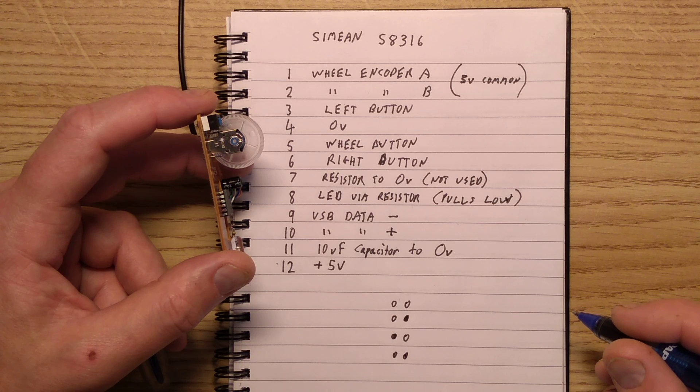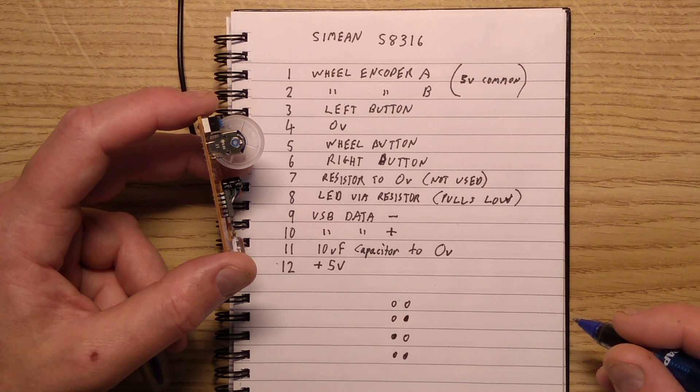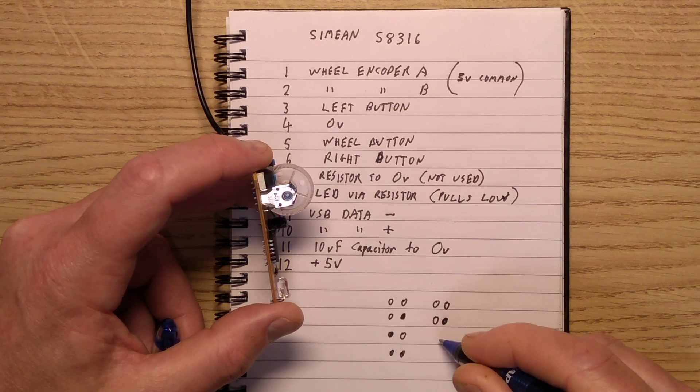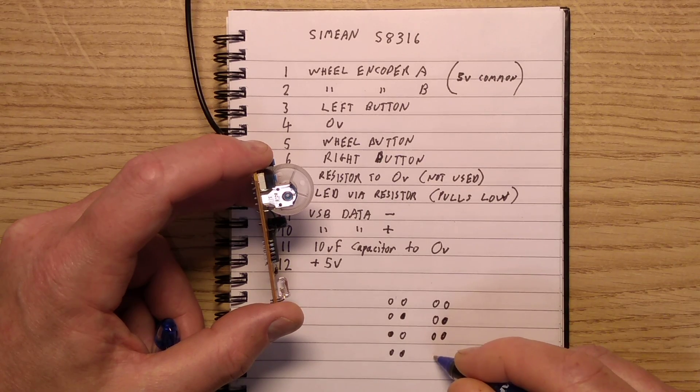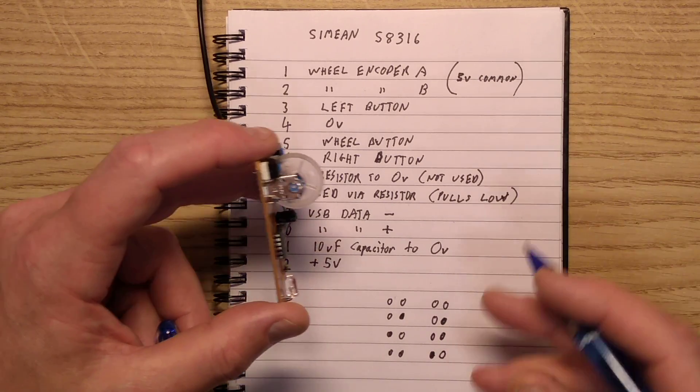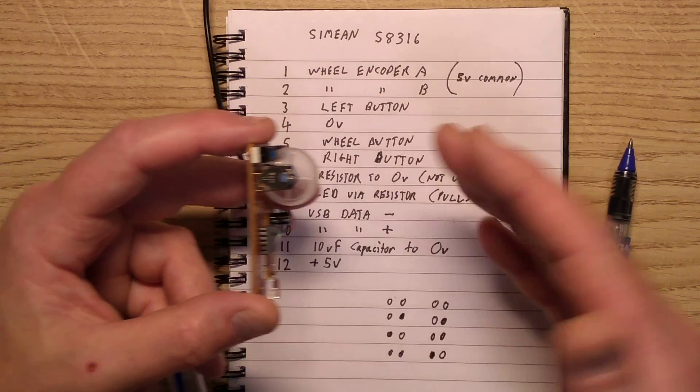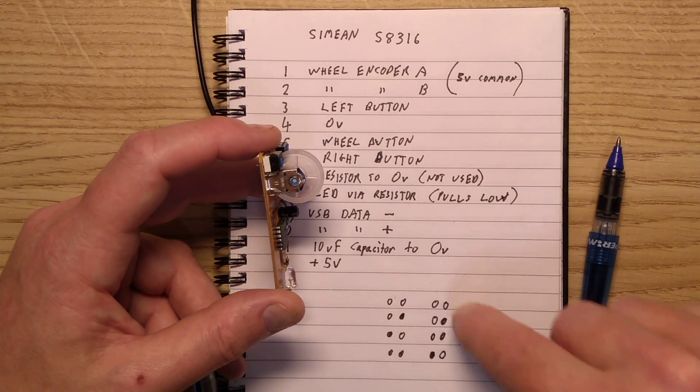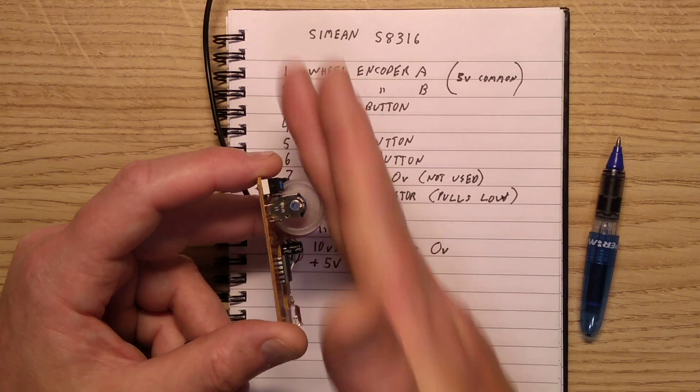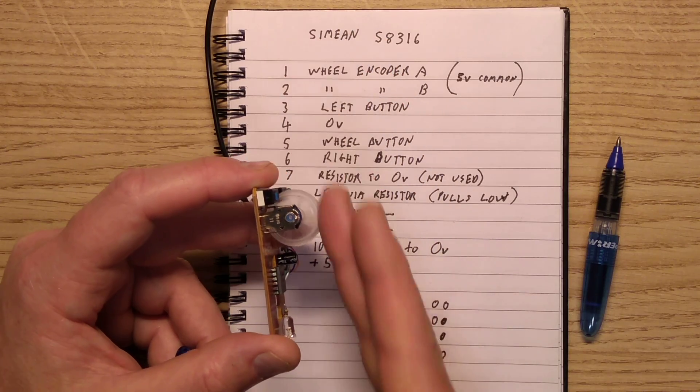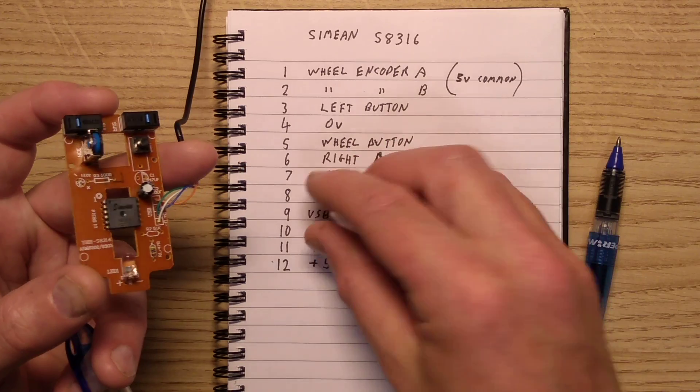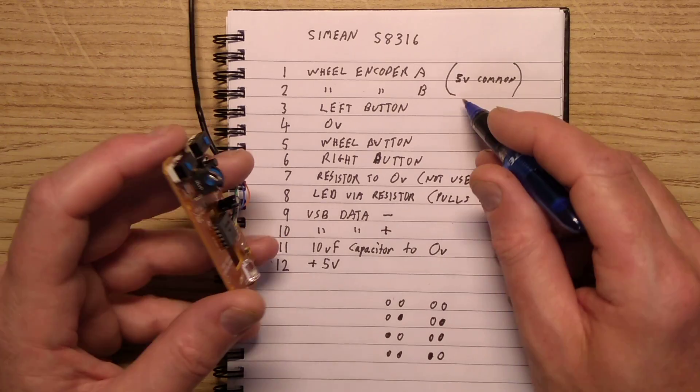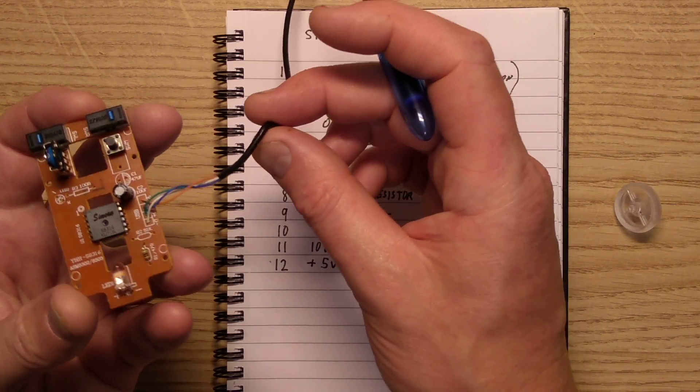Technically speaking this is gray code so only one bit should change at a time. But the idea is that as you rotate this it does make these contacts in sequence, and by working out the sequence of the contacts it knows the direction, and by working out the speed that it happens it knows the speed of the encoder. So when you run it backwards and forwards it can actually tell, it can track that.